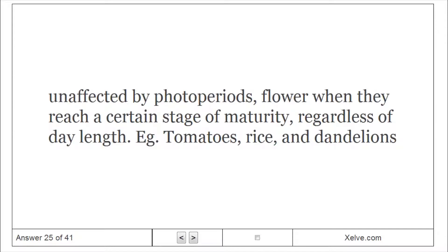A day-neutral plant: unaffected by photoperiods, flower when they reach a certain stage of maturity regardless of day length, e.g., tomatoes, rice, and dandelions.